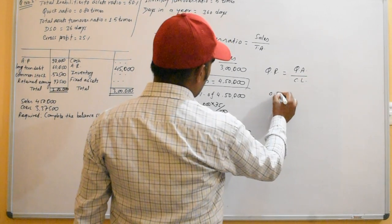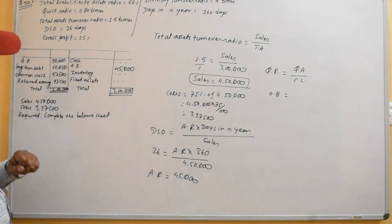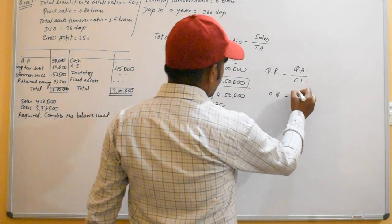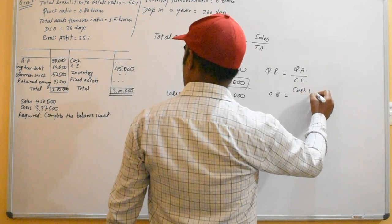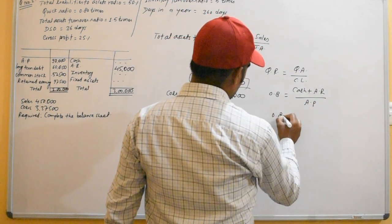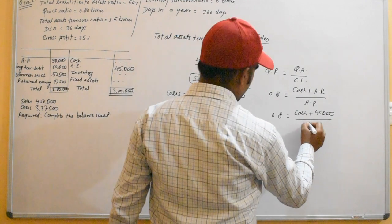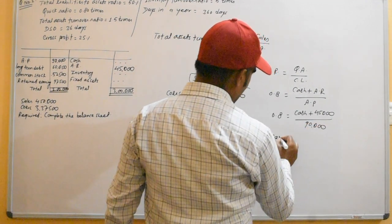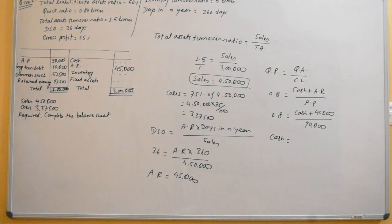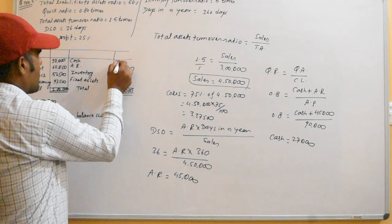Quick ratio is 0.8, which equals quick assets — that is, cash plus accounts receivable — divided by current liabilities. Accounts receivable is 45,000. Using the formula: cash plus 45,000 divided by accounts payable equals 0.8. Multiplying through, cash works out to 27,000.